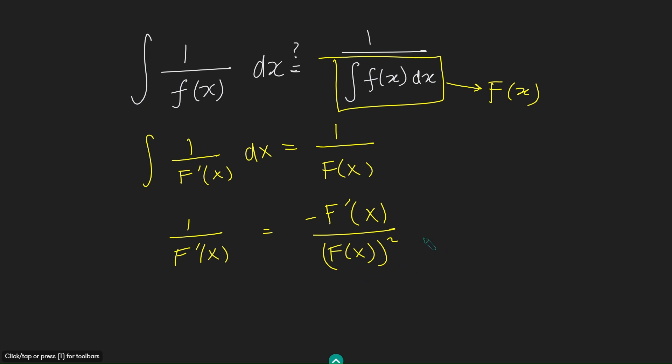Cross multiplying and bringing everything to one side, I get f of x squared plus f prime of x squared equals zero. And the only way this is possible is if this guy and this guy are both zero.